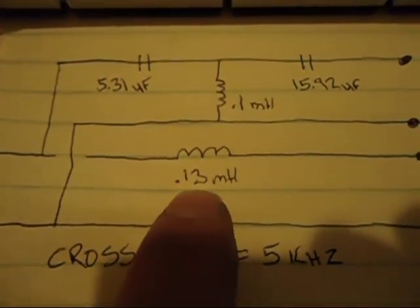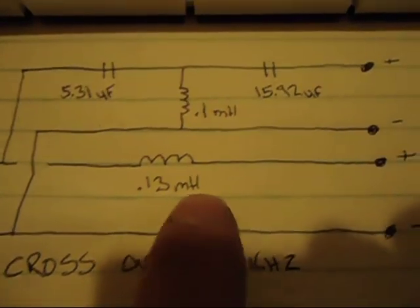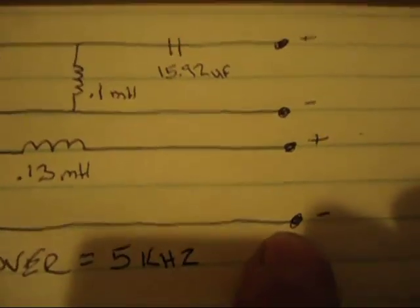Let's put the 0.13 millihenry inductor in series with the woofer. I'll just take the positive from the amplifier, put it on one side. There's the woofer coiling, one and two positive to my woofer.